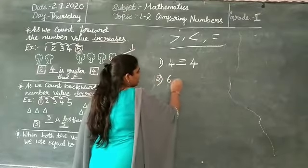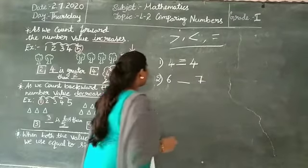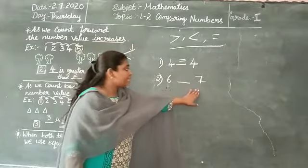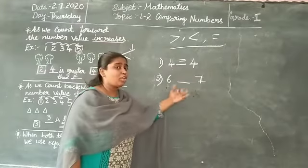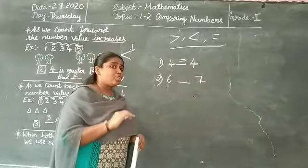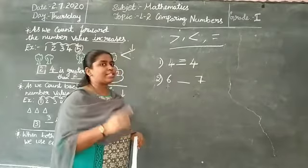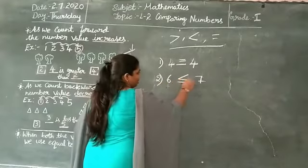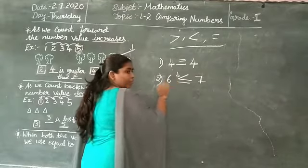Here — 6 dash 7. So 6 is less than 7 or greater than 7? Because 6 is small. So should the point be close or open towards 6? Close. See — the point is close. Remember the rules.